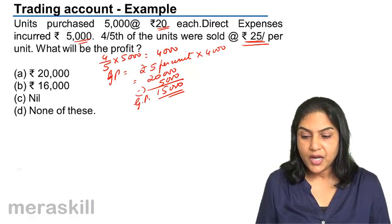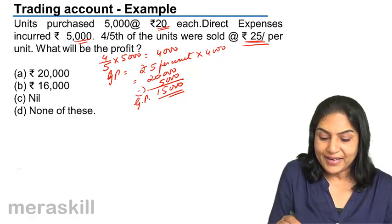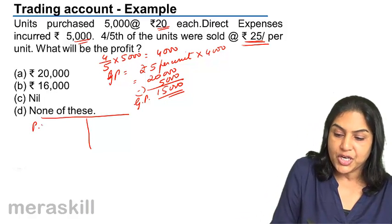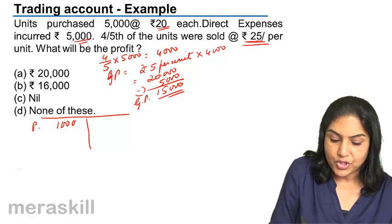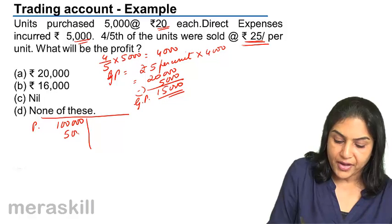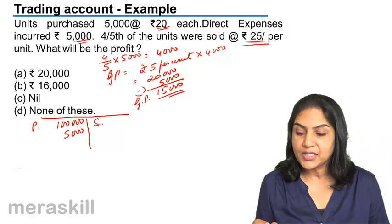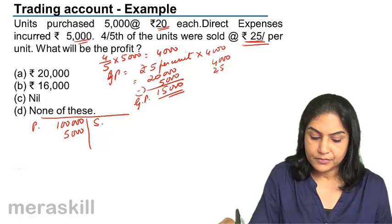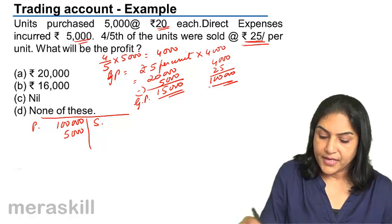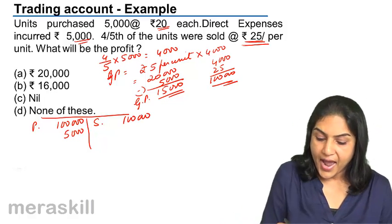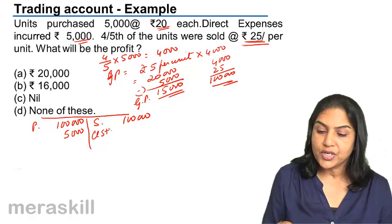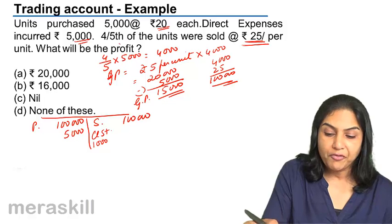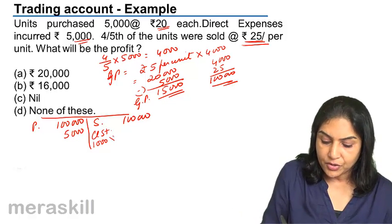Now if we prepare a trading account to verify: there is no opening stock. Purchase cost is 5,000 units into 20, which is 1,00,000. Direct expenses are 5,000. Sales value is 4,000 units into 25, which is again 1,00,000. Closing stock is 1,000 units — because 5,000 units were purchased, four-fifths were sold, so one-fifth of 5,000, that is 1,000 units, remain — valued at 20 each, giving 20,000.